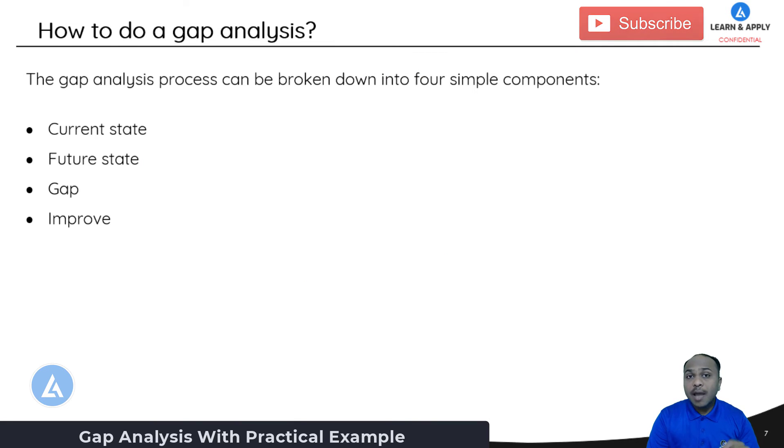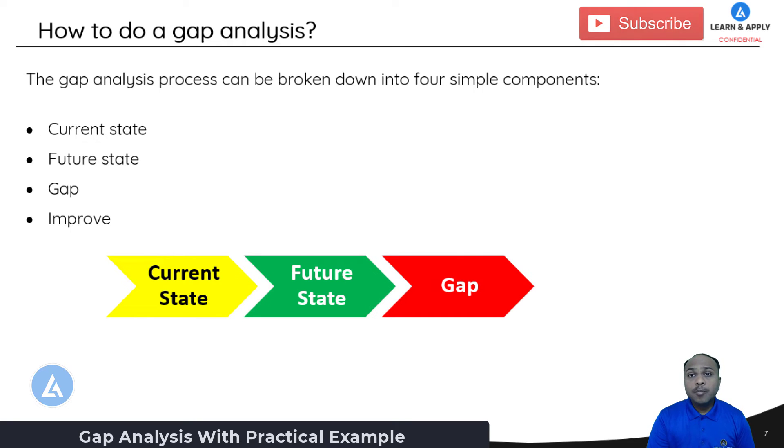How to do a gap analysis. The gap analysis process can be broken down into four simple components. The first one is what is the current state. The second component is what will be the future state. And as we had seen the difference between these two components is called as a gap and this is our third important component. The last component is very important to bridge this gap or to move the current state to the future state and for that purpose we need to take the actions. The fourth component is improve.